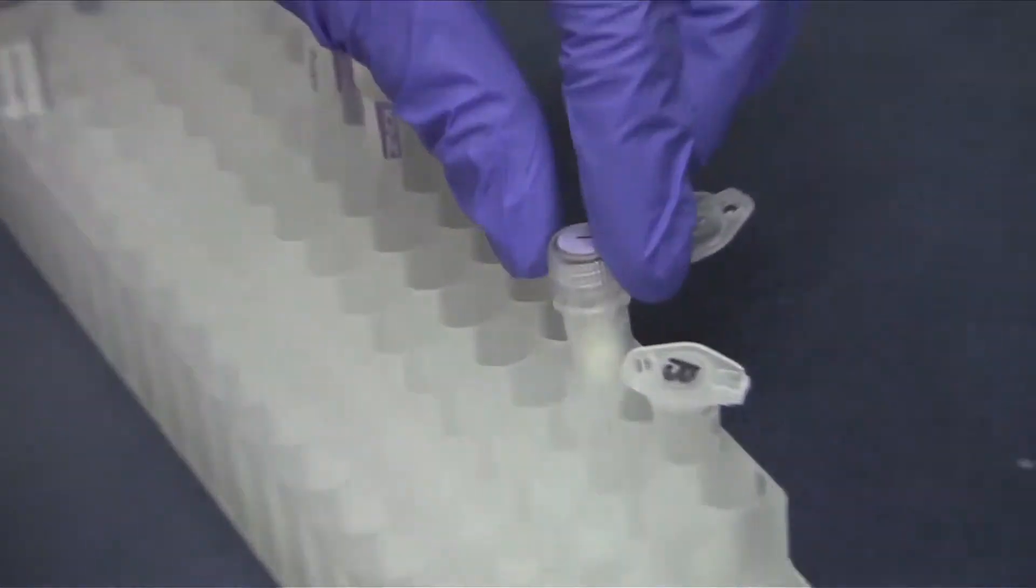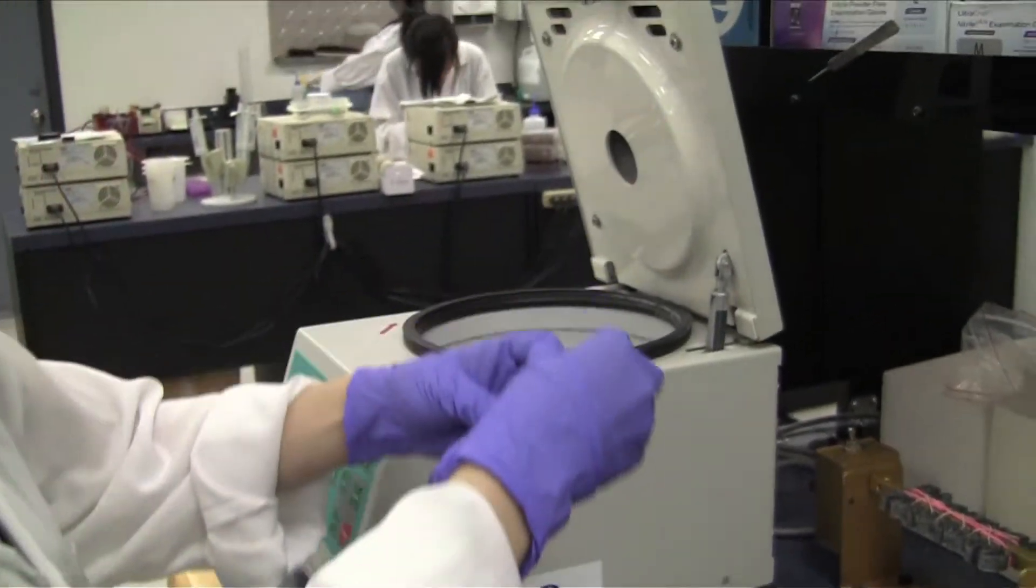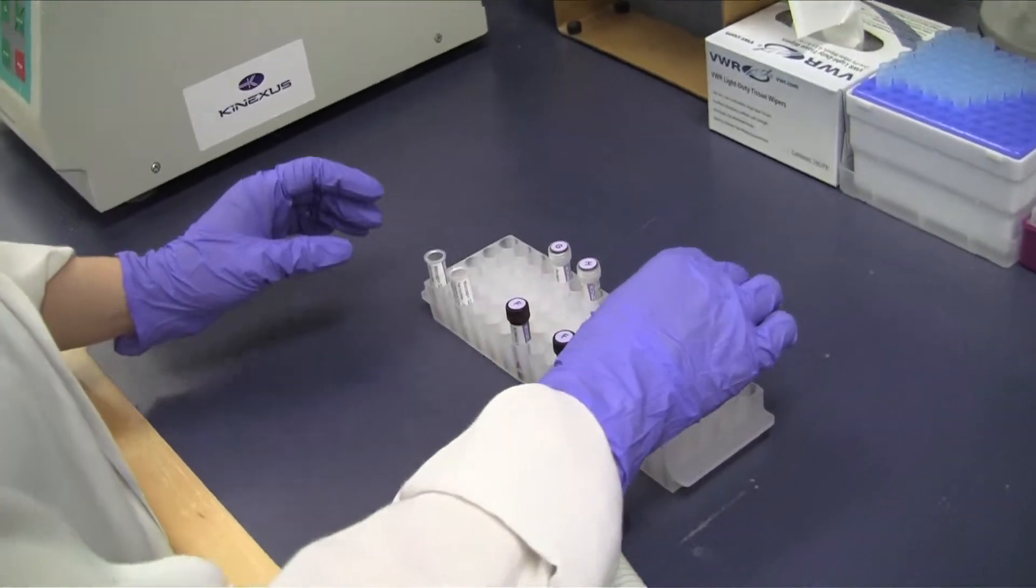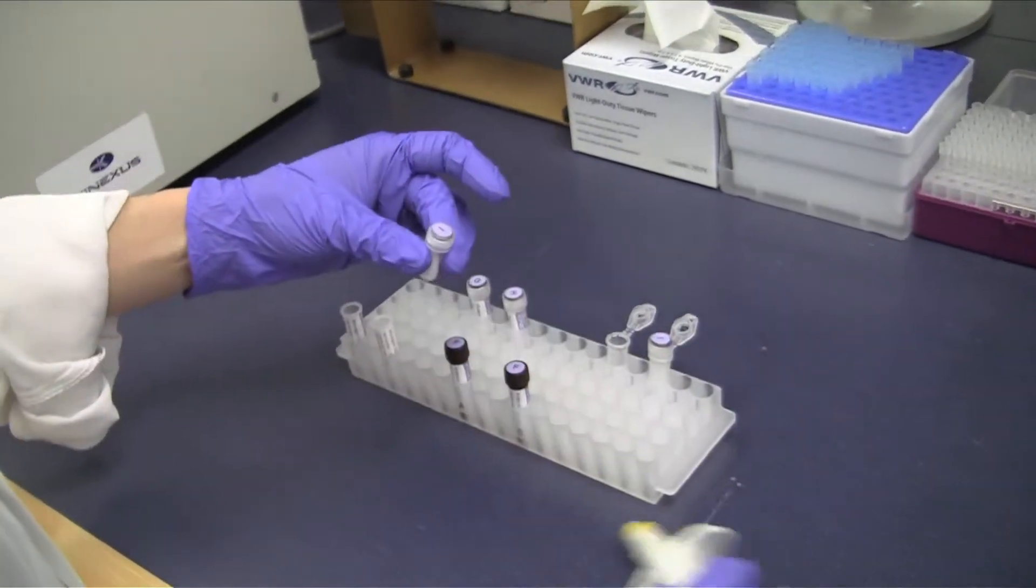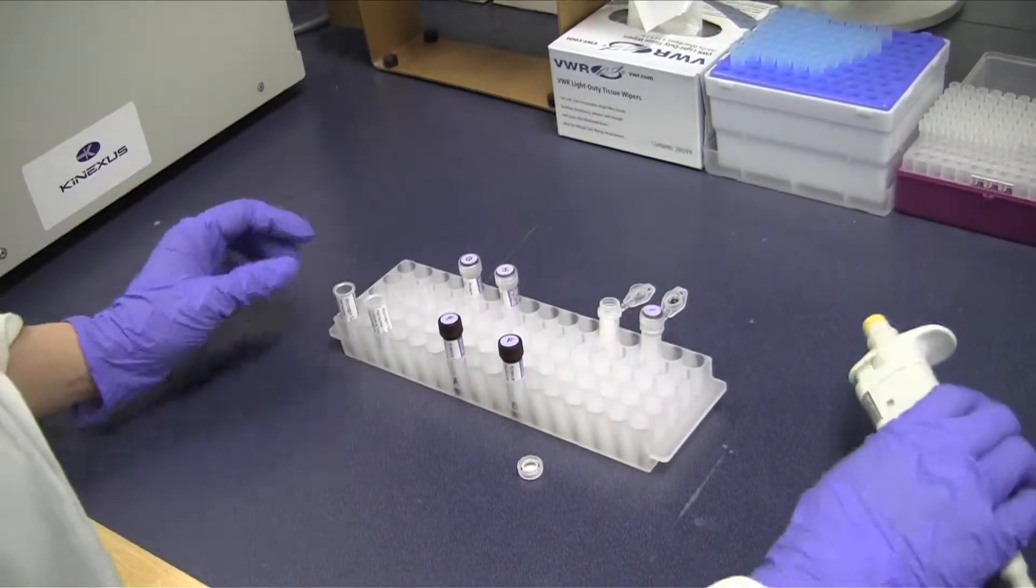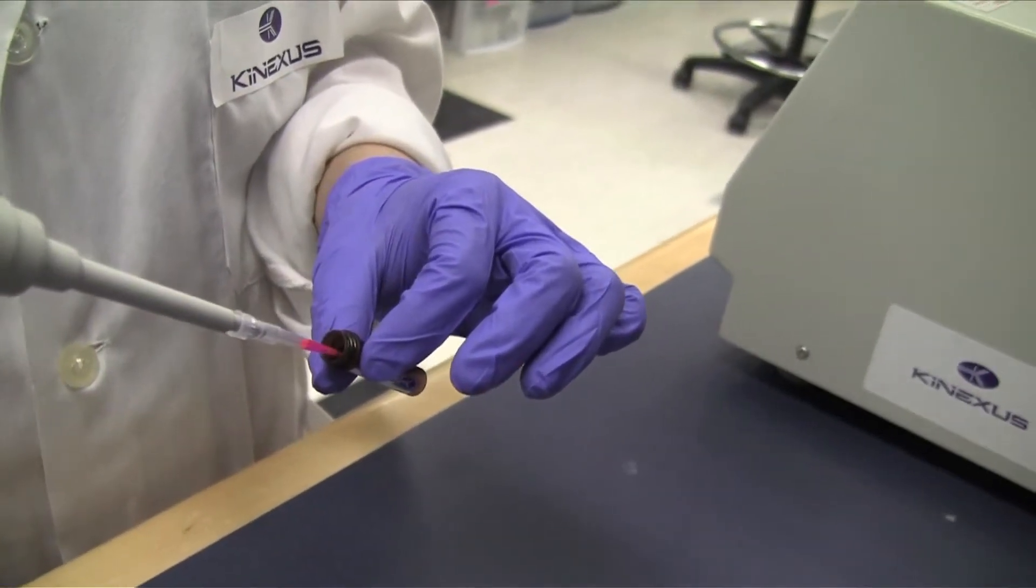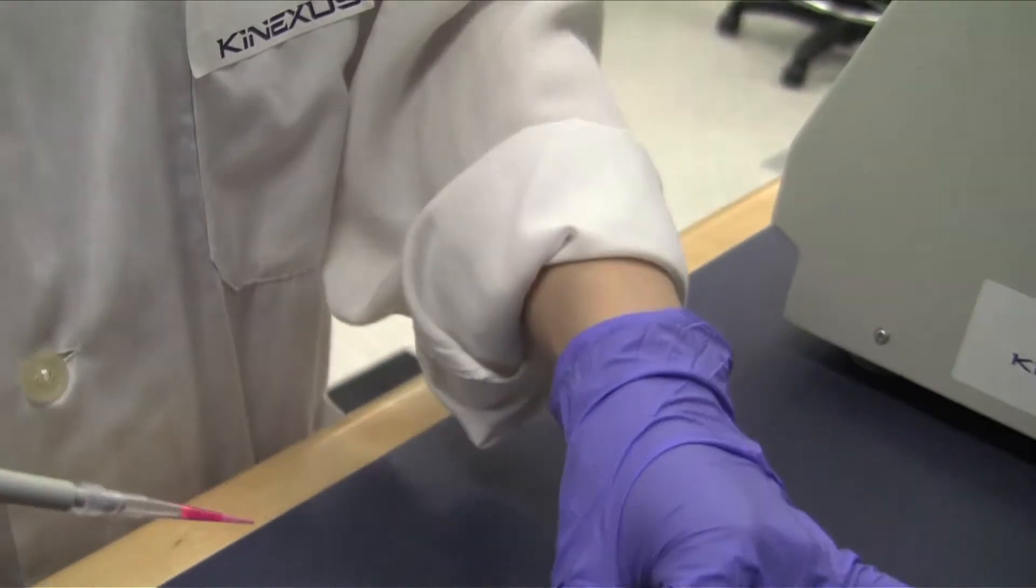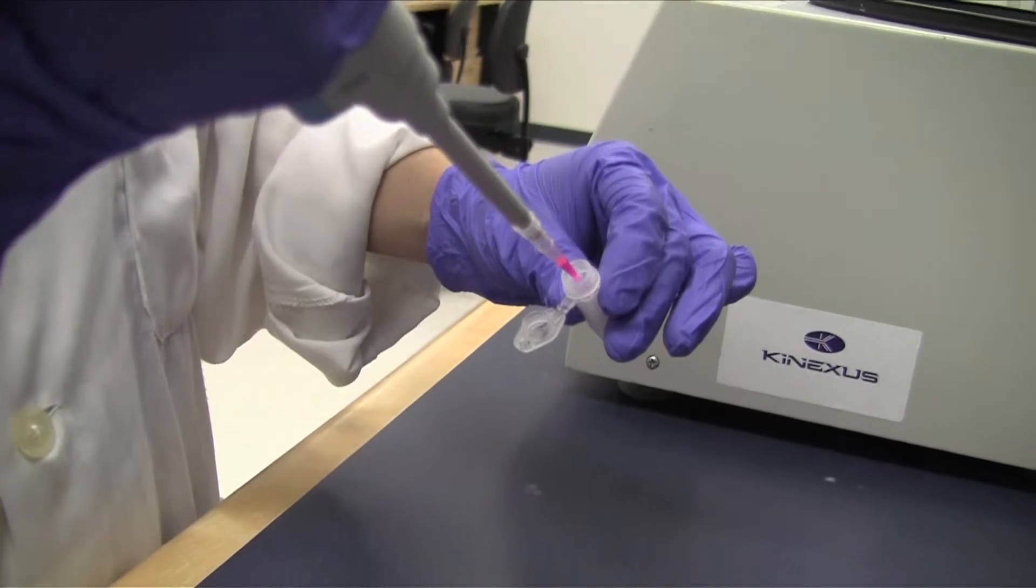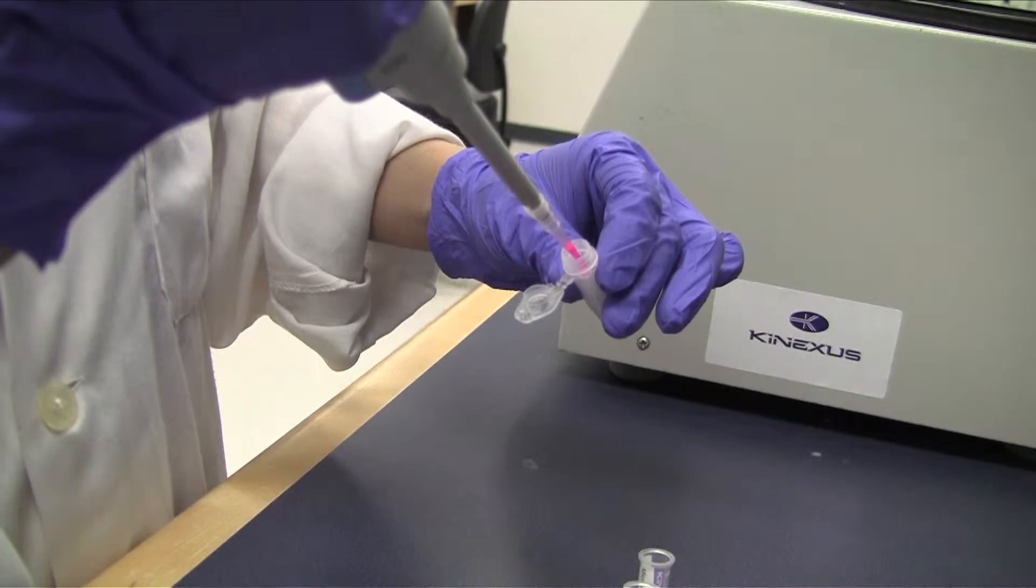Place the micro spin G25 column into a clean 1.5 milliliter microcentrifuge tube labeled with your sample IDs. Load your samples with the whole labeling reaction mixture slowly onto the top of the resin of the column. Your samples will appear pink in color due to the addition of the dye.